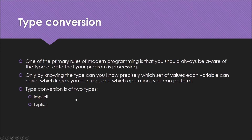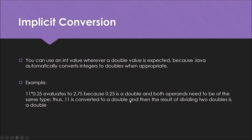You can convert one value into another. There are two types of conversions: implicit conversion and explicit conversion. You can use an int value wherever a double value is expected because Java automatically converts integers to doubles when appropriate. For example, in 11 * 0.25, since 0.25 is a double, Java converts 11 to 11.0, and dividing two doubles gives a double result.